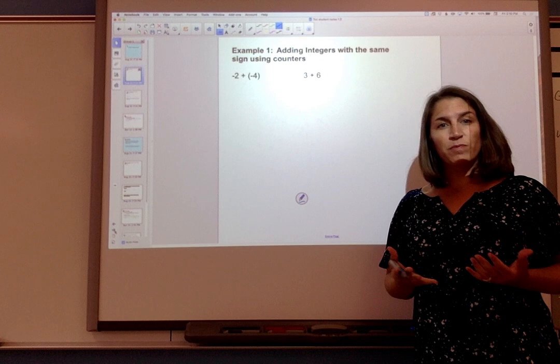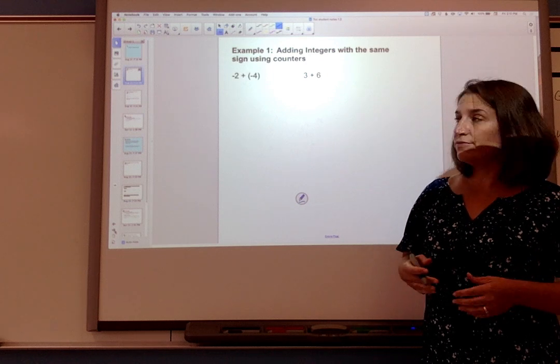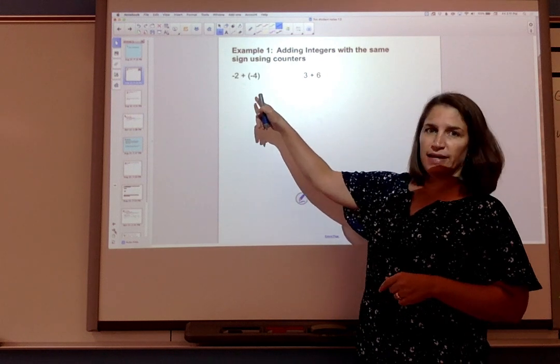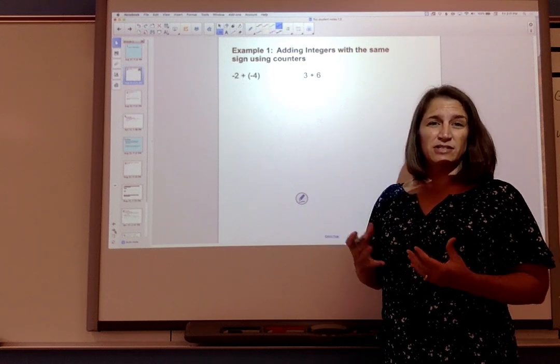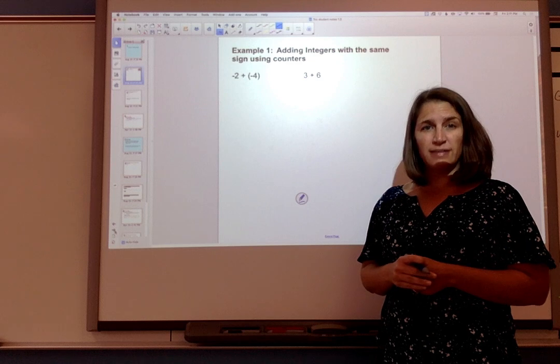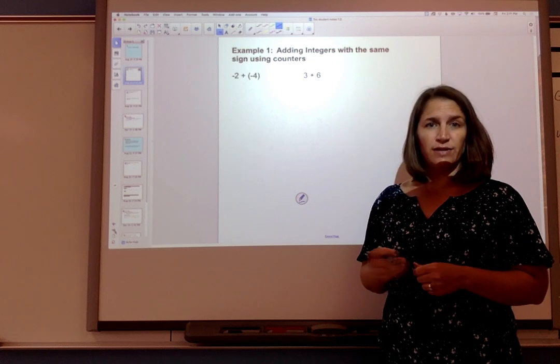So either the numbers are both positive or both negative. So here we have -2 + (-4). To model this using counters on paper I like to just use a plus sign for a positive integer and a negative sign for a negative integer.